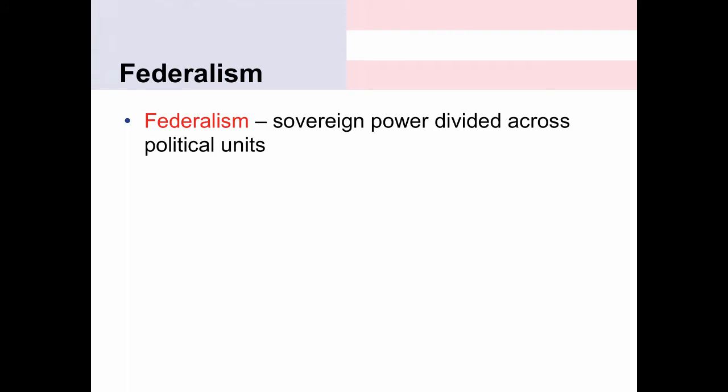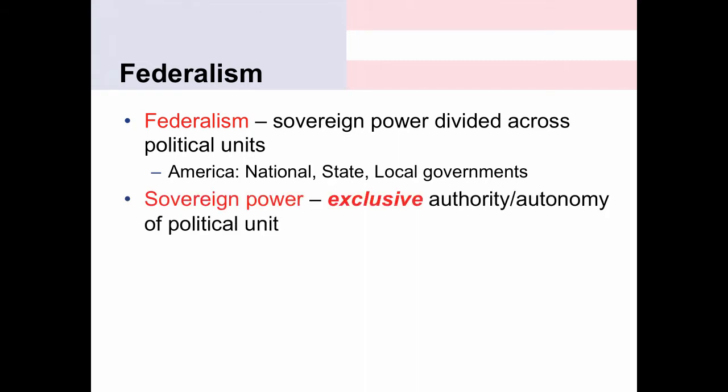What do we mean by federalism? Federalism simply means sovereign power divided across political units. Political units in America are the national government — Congress, the presidency — state governments — the governor, the state legislature — and also local governments like the city council. Those are three different levels: national, state, and local. We're going to primarily be talking about national versus state powers. Sovereign power means power that is exclusive to the political unit — exclusive authority or autonomy of one of these political units.